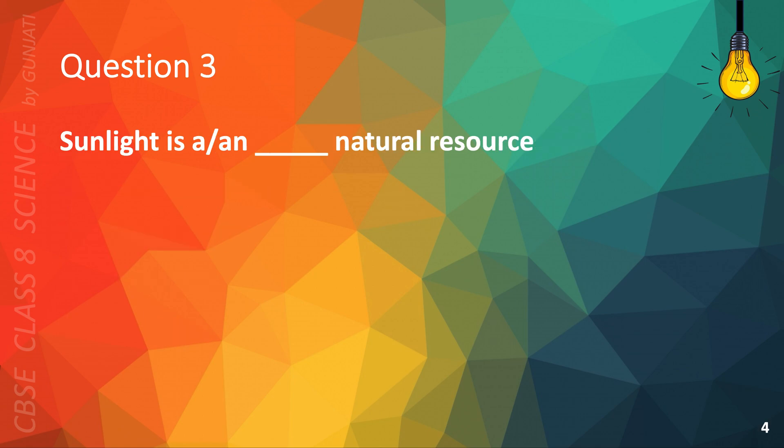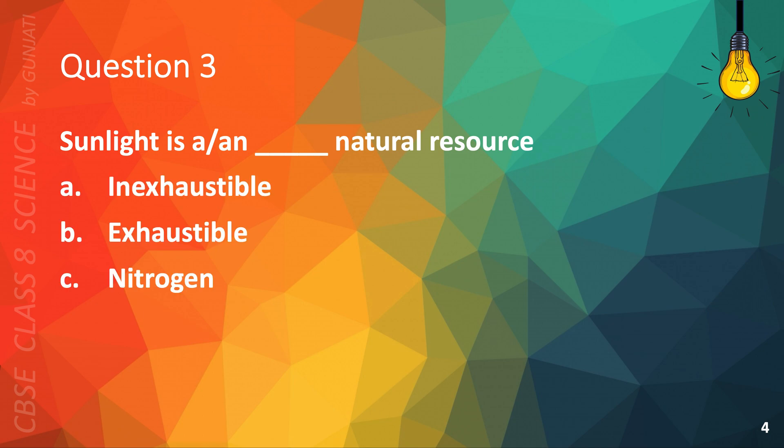Question 3. Sunlight is a/n blank natural resource. A. Inexhaustible. B. Exhaustible. C. Nitrogen. Or D. Oxygen.